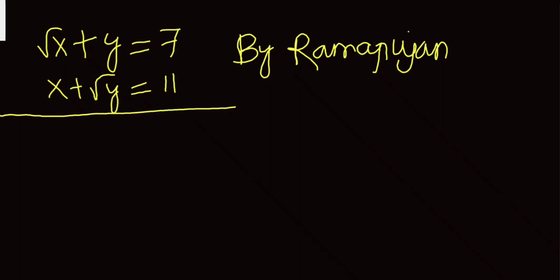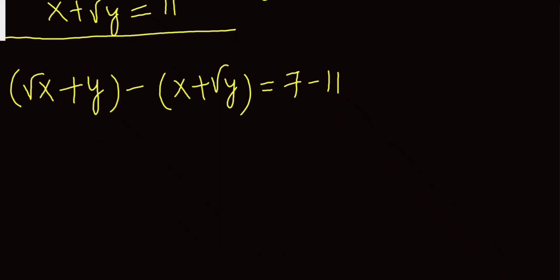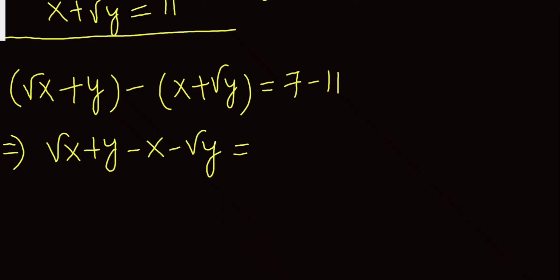The first thing we are going to do is subtract these two equations and see what happens. So x plus square root of y equals seven minus eleven. Now simplifying a bit: square root of x plus y minus x minus y equals negative four.